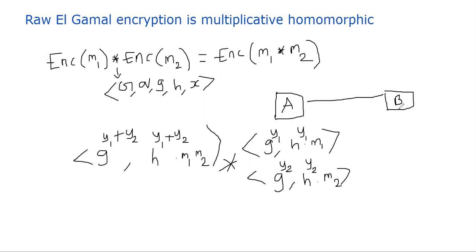But what Bob will do is basically he knows the private component X. All he's going to do is he needs to just get rid of the H component. So he's going to replace H by G power X because he knows the X. So he will take this component and divide this by this component times X.